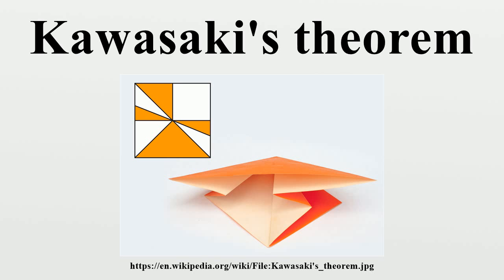However, this equivalent form applies only to a crease pattern on a flat piece of paper, whereas the alternating sum form of the condition remains valid for crease patterns on conical sheets of paper with non-zero defect at the vertex.